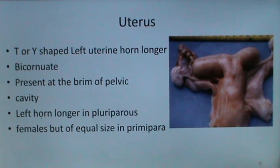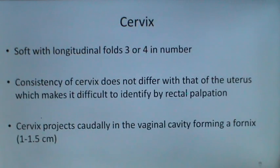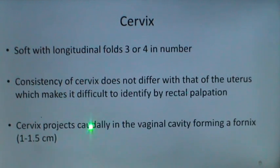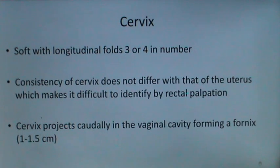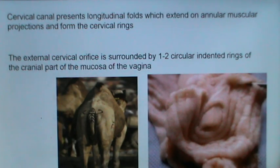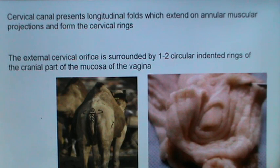The cervix is soft with 3 or 4 longitudinal folds. Its consistency does not differ from that of the uterus, making it difficult to identify by transrectal palpation. The cervix projects caudally into the vaginal cavity, forming a fornix of 1 to 1.5 cm. The cervical canal presents longitudinal folds extending on annular muscular projections to form cervical rings. The external cervical orifice is surrounded by 1 to 2 circular indented rings of the cranial vaginal mucosa.